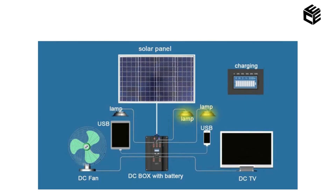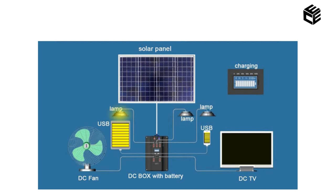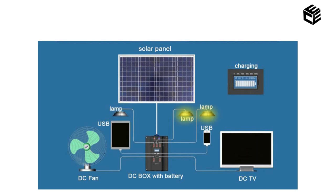One more example: here we have a solar panel and the solar panel's output is connected to a DC box with a battery. This DC box with a battery is controlling a number of devices like fan, lamp, USB and TV. So the DC box with a battery is controlling all the devices connected to it. This is also an example of a control system.